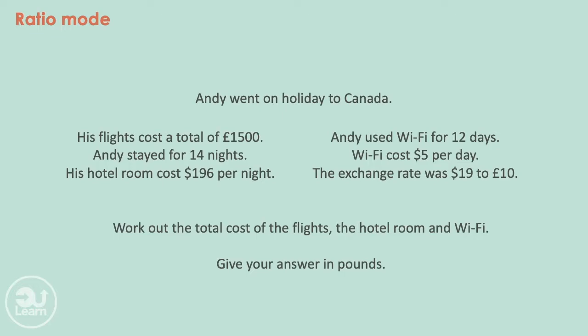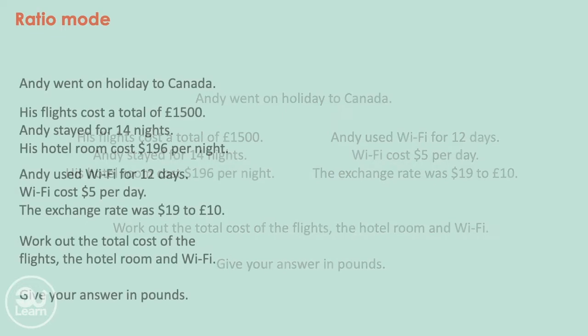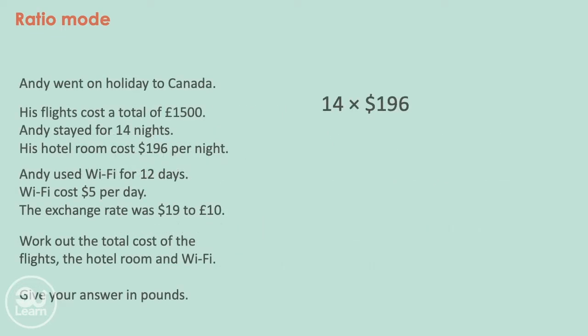We need to find the total dollars Andy spends. First, we calculate how much he's spending on the hotel room. He spends $196 per night for 14 days. So to calculate, we multiply $196 by 14, which is equal to $2,744. For Wi-Fi, at 5 dollars a day for 12 days, that equals to $60.